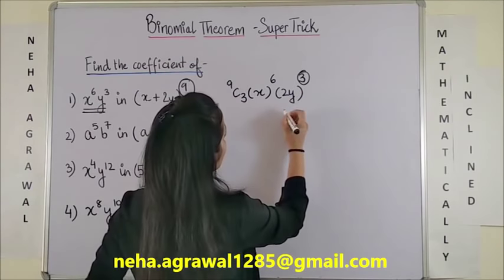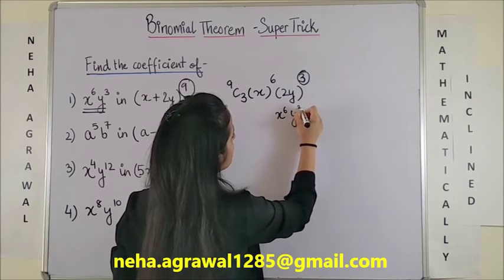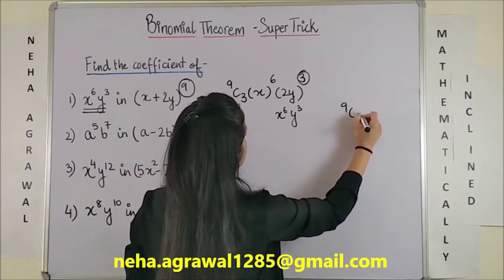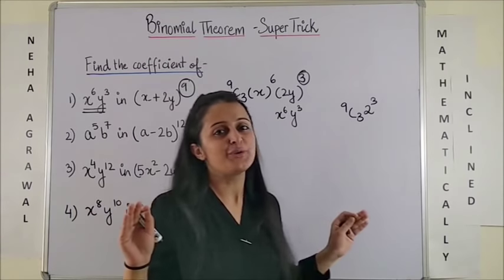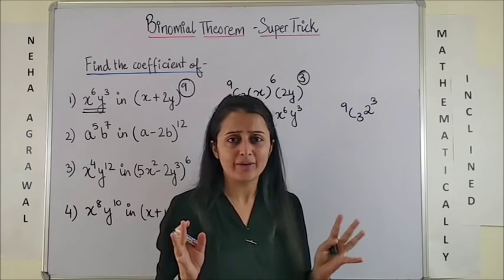So the coefficient of your x^6 y^3 would be 9c3 into 2 cubed. Which I am sure you all can solve. Wasn't this so quick?